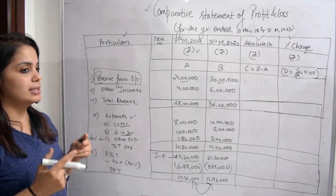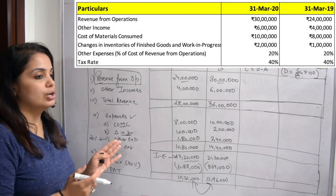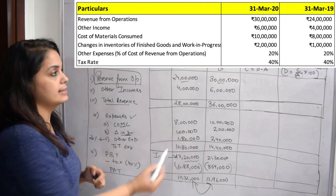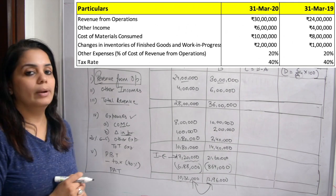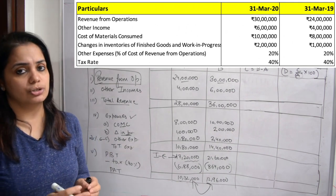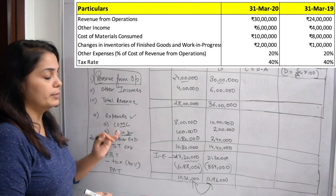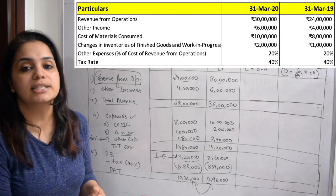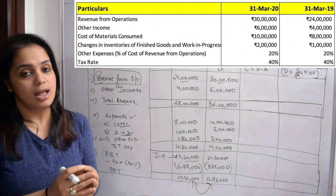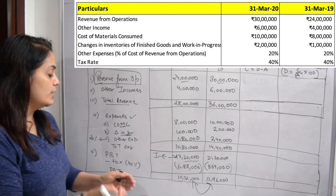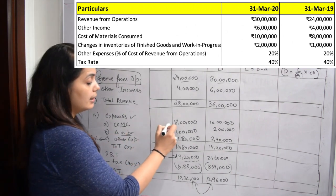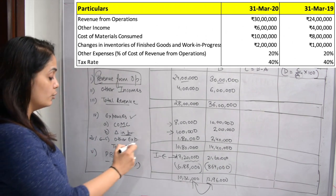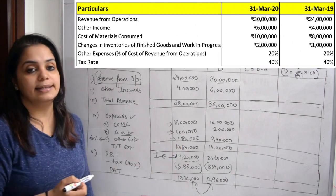Then I will look at expenses. I have two items given in expenses: cost of material consumed and change in inventories. Now other expenses are given as 20% of cost of revenue from operations. The cost of revenue from operations is basically cost of material consumed plus change in inventories — this is our cost of goods sold. So for 2019 I have 8 lakhs plus 1 lakh, giving 9 lakhs, and 20% of 9 lakhs gives me 1 lakh 80,000 for other expenses.